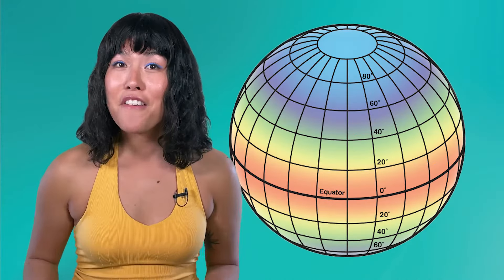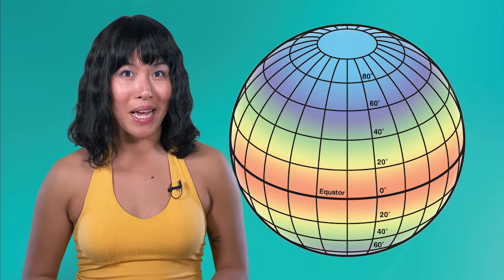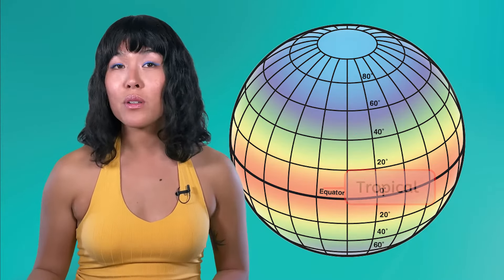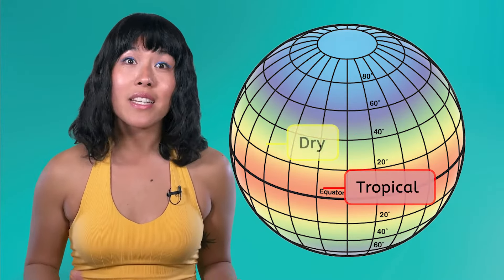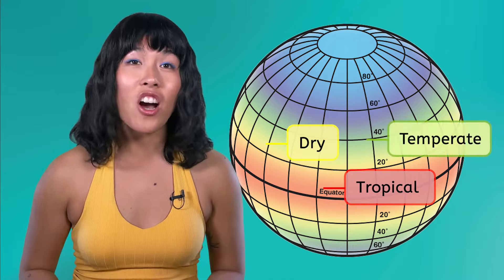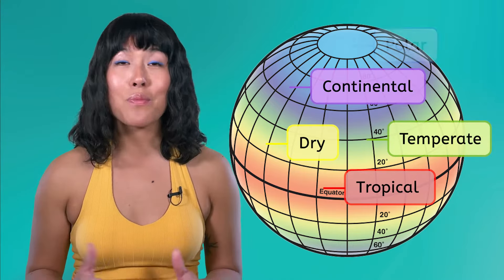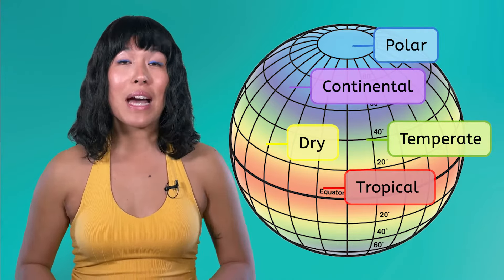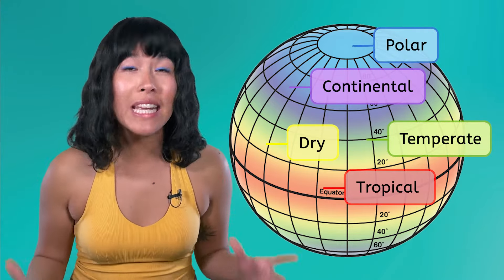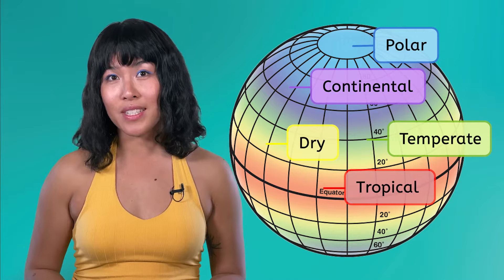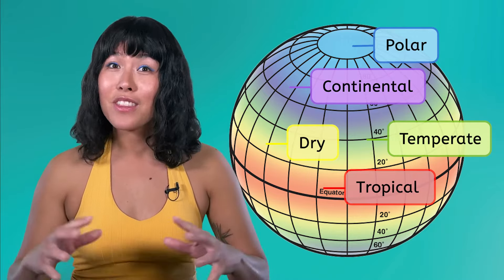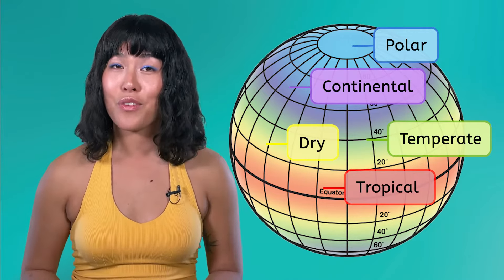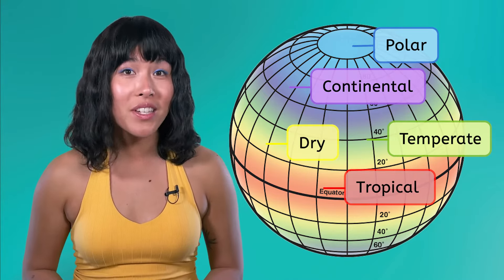There are five main climate types: tropical, dry, temperate, continental, and polar. Each climate type has its own unique set of characteristics that affect the weather patterns found in that region.